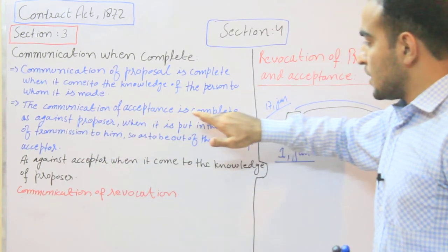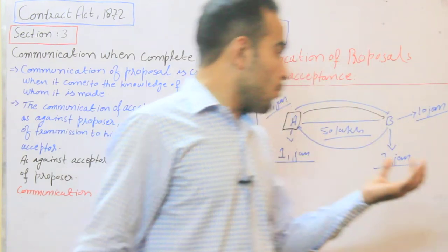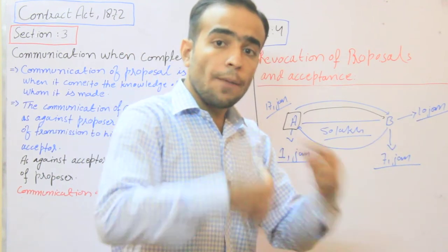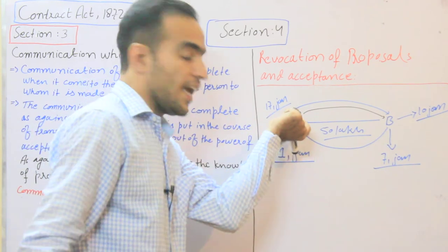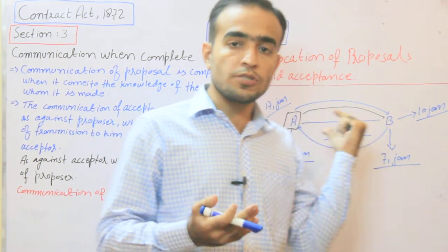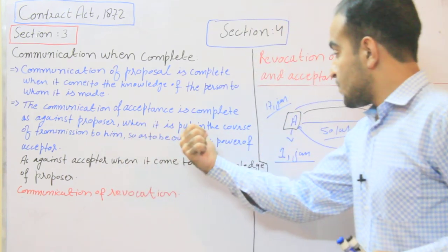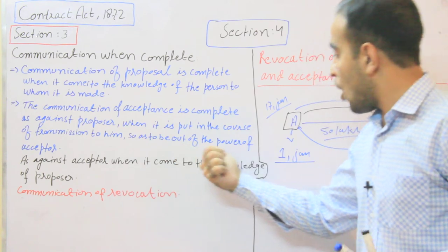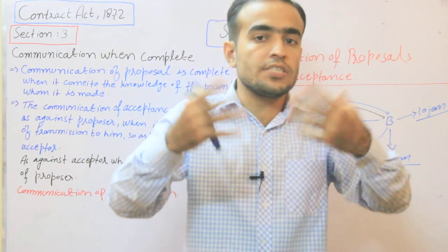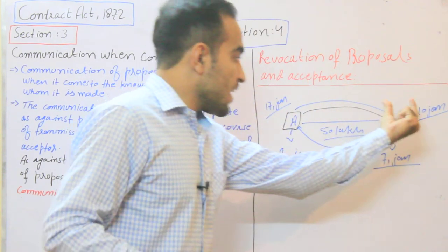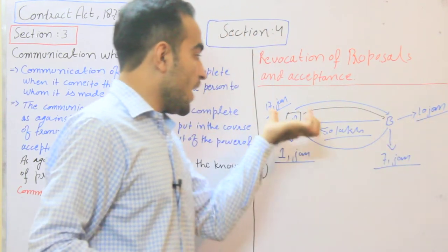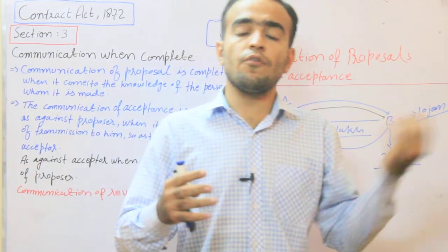The communication of acceptance is complete as against the proposer when it is put in the course of transmission to him, so as to be out of the power of the acceptor. یعنی جیسے ہی 10 January کو B نے letter post کیا، letter B کے control سے نکل گیا — اور اسی 10 January کو A کے خلاف communication of acceptance complete ہو جاتا ہے۔